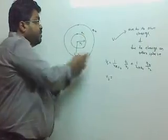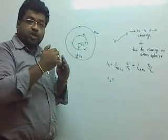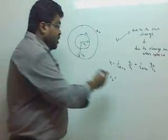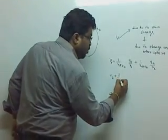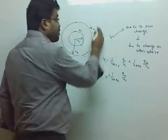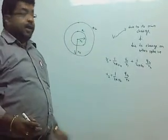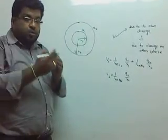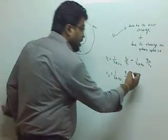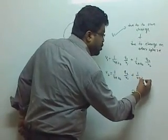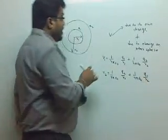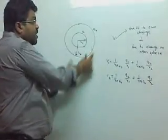Now for the outer sphere: it has charge Q2, so V2 includes 1 over 4 pi epsilon-naught, Q2 over R2. But Q1 on the inner sphere also contributes to the potential at the outer sphere. So the potential due to Q1 at radius R2 is 1 over 4 pi epsilon-naught, Q1 over R2.